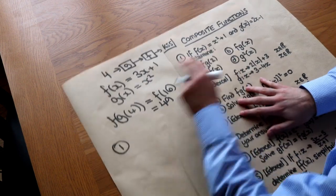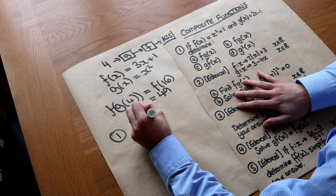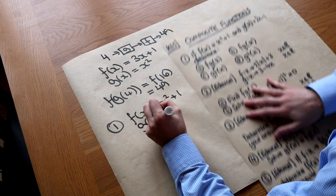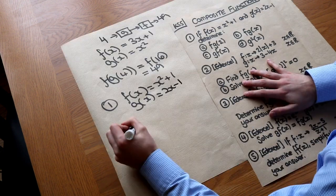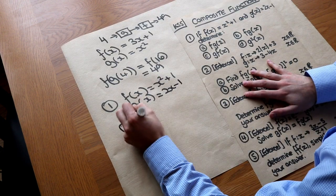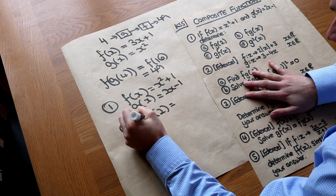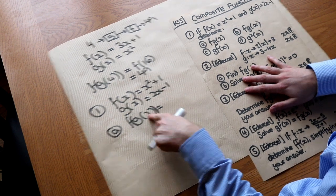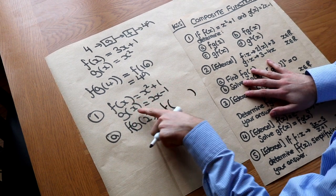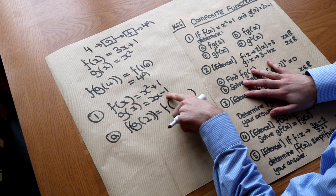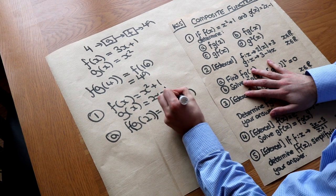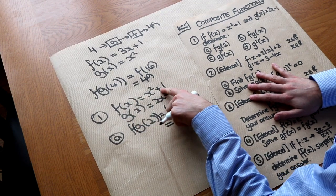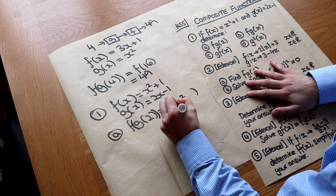Now let's apply this to these questions. We've got f(x) = x² + 1 and g(x) = 2x − 1. Firstly we need to find f(g(2)). It means f of g(2), so let's do g(2) first. g(2) = 2×2 − 1 = 3. Then f(3) = 3² + 1 = 10.